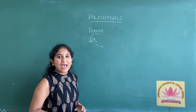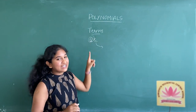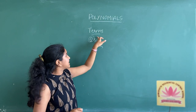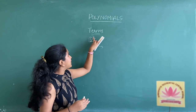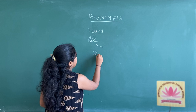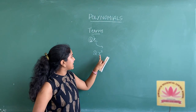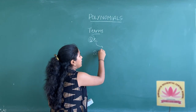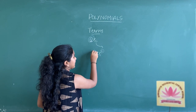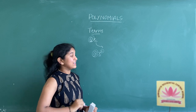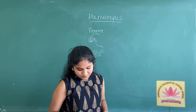A variable can also have some powers like whole numbers: 1, 2, 3, 4, 5. The power does not consist of any decimal expansion. Let us take one more term in which the variable consists of a power. Consider 2x squared — here x is a variable with power 2, which is a whole number, and 2 is a constant and also the coefficient of x.